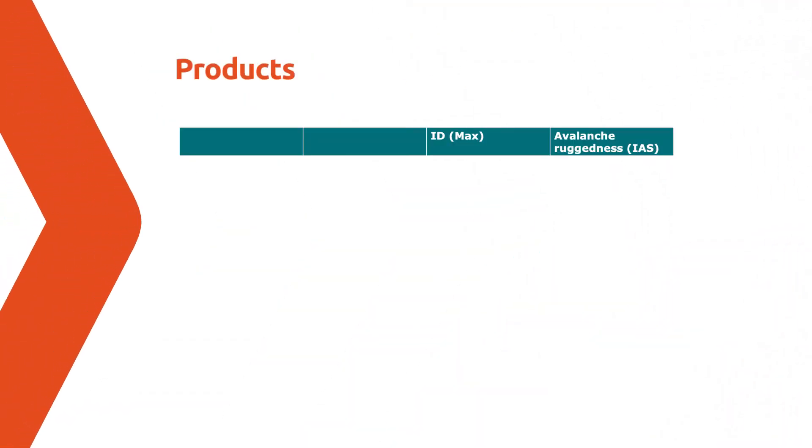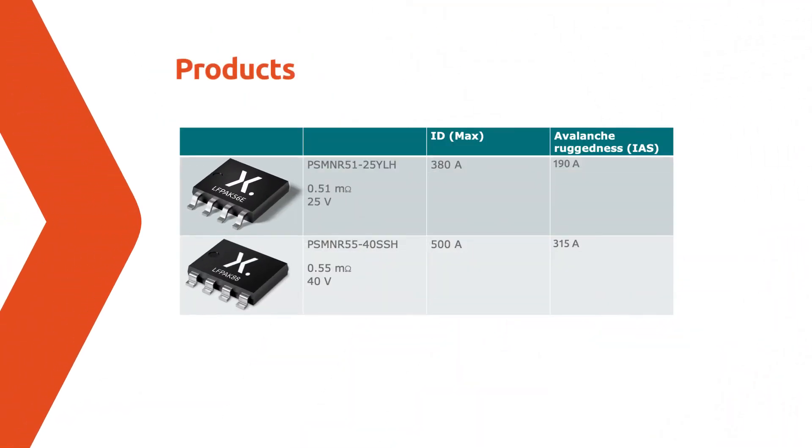The products used in the demo are the ultra-low RDS(on) devices from the LFPAK family of power MOSFETs. By using the enhanced version of the LFPAK 56 at a low voltage of 25 volts, we can achieve an RDS(on) as low as 0.51 milliohms.